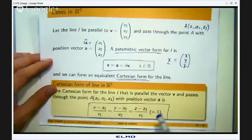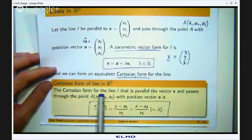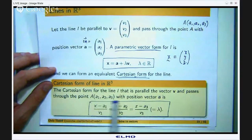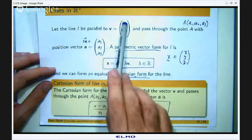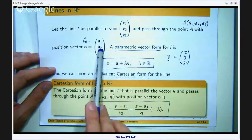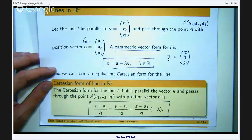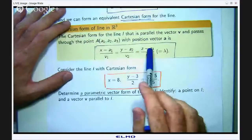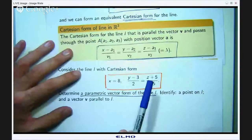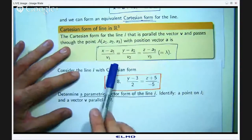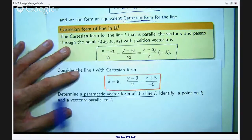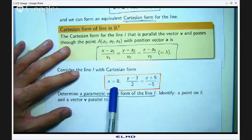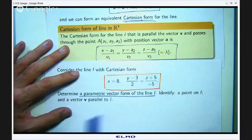Now the Cartesian form is given here. So the Cartesian form of a line L that is parallel to the vector V and passes through the point A with these coordinates is given here. So the V1, V2, V3 comes from the vector V and the A1, A2, A3 comes from the point or the position vector of A. Now if you look up here this is not quite what we have got down here because this is a little bit different to this. So what we would interpret this as saying is basically the V1 is 0. So A1 would be 8, A2 would be 3, A3 would be –5, V1 would be 0, V2 would be 2 and V3 would be –5.